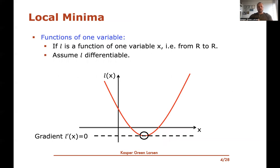To start simply, let's consider a function from just one variable to one value. If l is a differentiable function from R to R, at the minimum the gradient evaluated at that point has to be equal to zero. Of course, the gradient could also be zero at local maxima and saddle points, but it definitely has to be zero at the minimum. We'll use this as a guide for minimizing the general function from d variables to a single value.